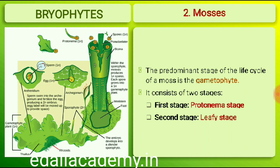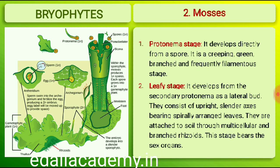The predominant stage of the life cycle of moss is the gametophyte, which consists of two stages. The first stage is the protonema stage, which develops directly from a spore; it is a creeping, green, branched and frequently filamentous stage. The second stage is the leafy stage, which develops from the secondary protonema as a lateral bud. They consist of upright, slender axes bearing spirally arranged leaves. They are attached to the soil through multicellular and branched rhizoids. This stage bears the sex organs.